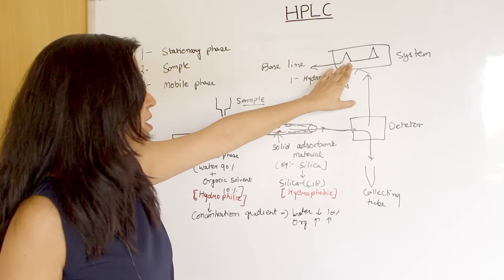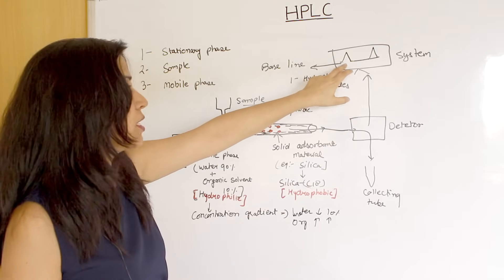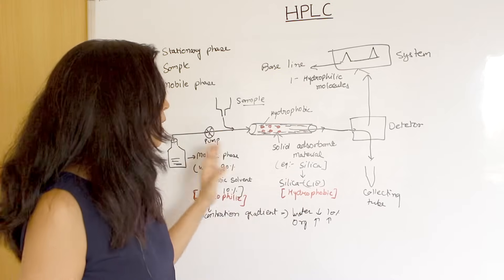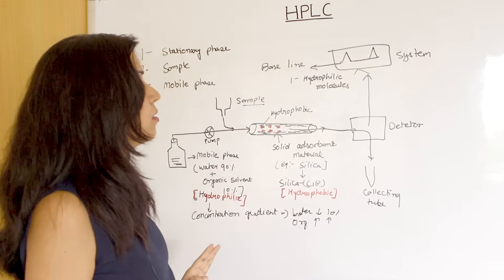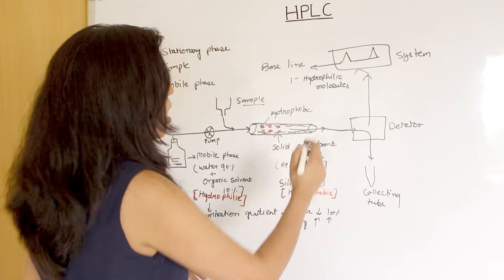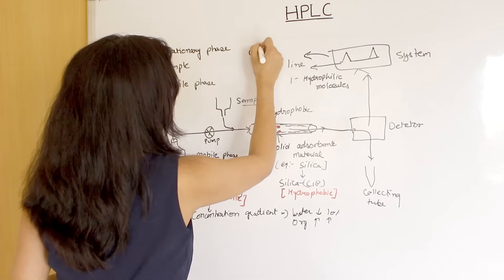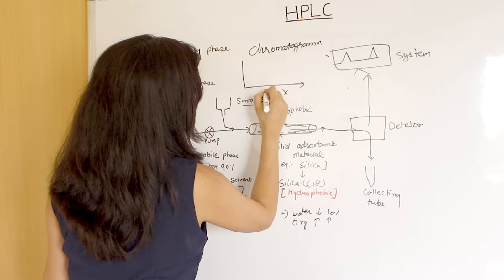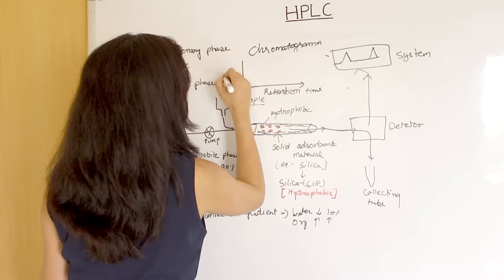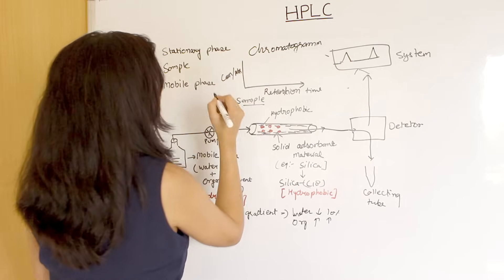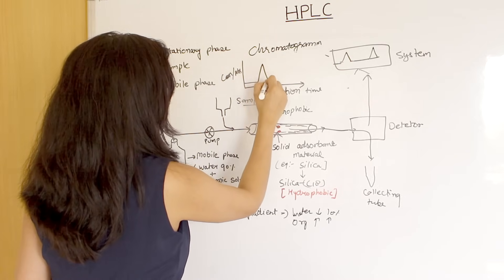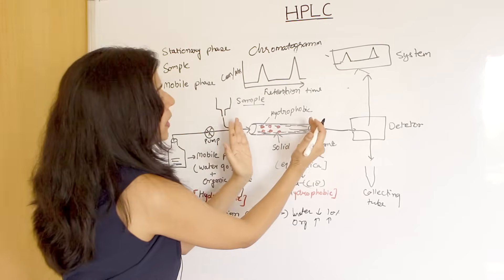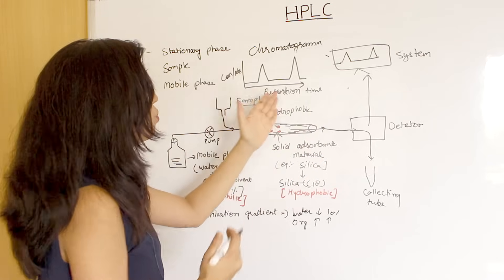The first peak was generated by hydrophilic molecules — the stationary phase was hydrophobic and they didn't form a bond, so they easily passed out. The last peak was developed by hydrophobic molecules. This graph is called a chromatogram. On the chromatogram, the X axis is retention time, and the Y axis is concentration or absorbance. Retention time is the time a component takes to stay in and pass through the column.